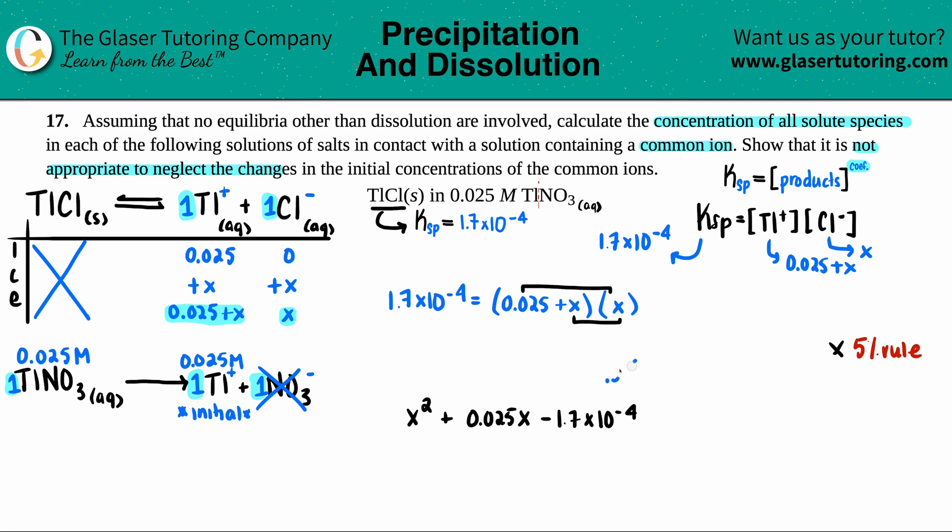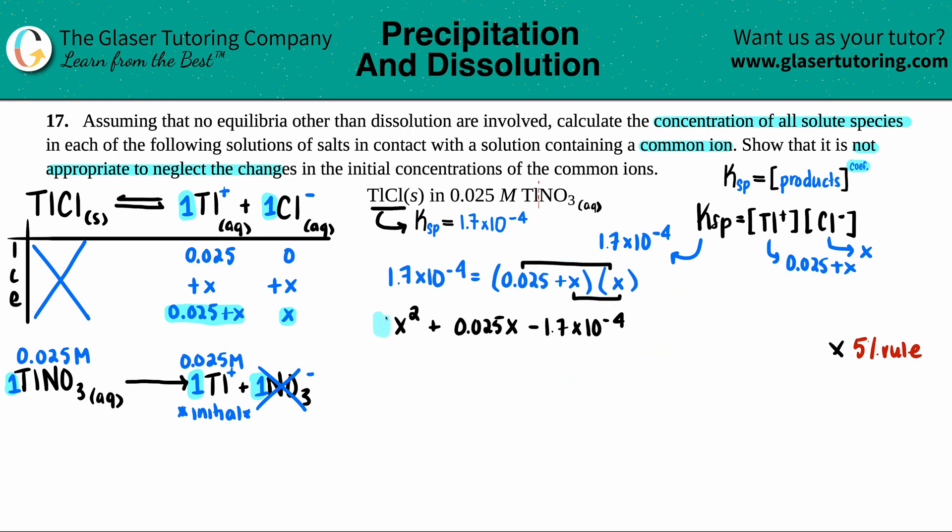The quadratic is coming up. I'm going to put this up here with our a, b, and c values. Remember, the a value is in front of the x²—there was a 1 here, so a = 1. The b value is the number in front of the x, so b = 0.025. The c value is just the number all by itself, but you have to take into consideration that charge, so c = -1.7×10⁻⁴.